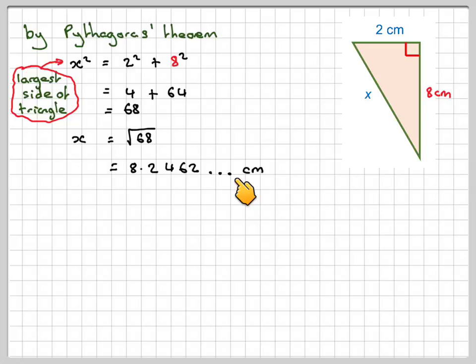You should write down a few calculator values, and then round it off to 3 significant figures. So that's 6, we'll make that 4 a 5, so that becomes 8.25 centimeters to 3 significant figures.